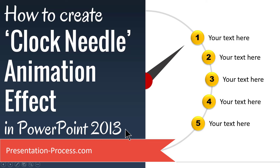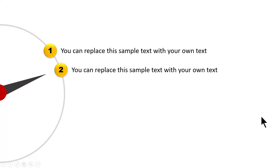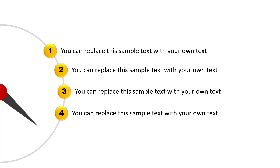The beautiful Clock Needle animation effect you will learn to create today looks like this. On a click, the Clock Needle comes in and then the first point is introduced. Then the Clock Needle moves and the second point is introduced. The Needle moves again, the third point, moves again, fourth point and the fifth point, and the Needle goes back.